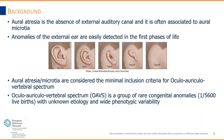What we call aural atresia is the absence of the external auditory canal that can be isolated or, as it often is, associated to aural microtia. Microtia is the anomaly of the pinna. Anomalies of the external ear, such as those of the pinna or those of the external auditory canal, can be easily detected in the first phases of life, even in newborns.